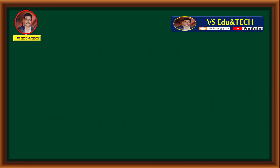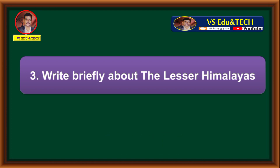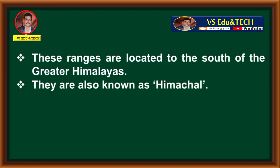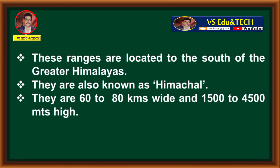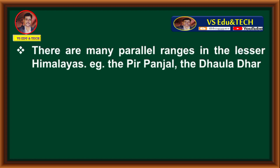Question 3: Write briefly about the Lesser Himalayas. These ranges are located to the south of the Greater Himalayas. They are also known as Himachal. They are 60 to 80 kilometers wide and 1,500 to 4,500 meters high. The eastern part is covered with forests. There are many parallel ranges in the Lesser Himalayas — for example, the Pirpanjal and the Dauladhar.